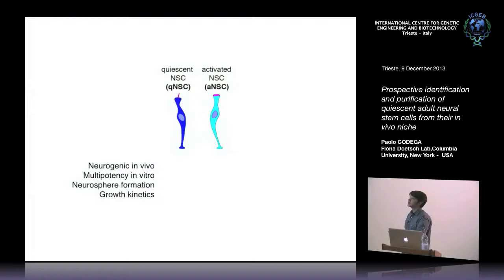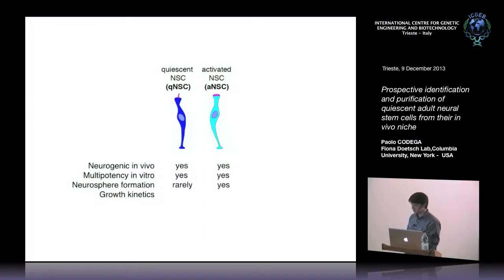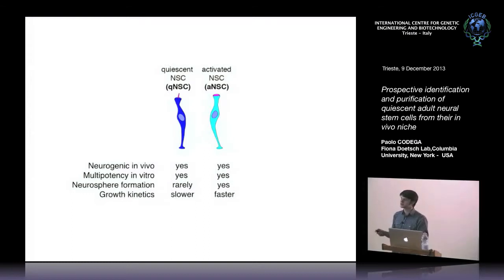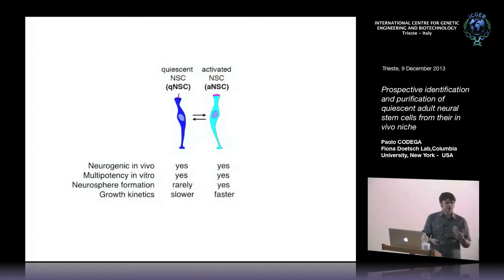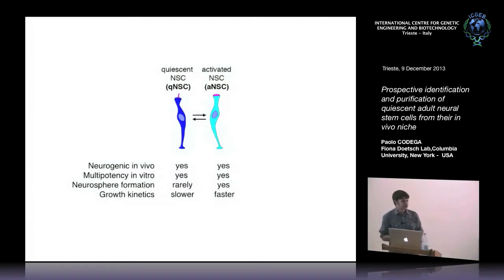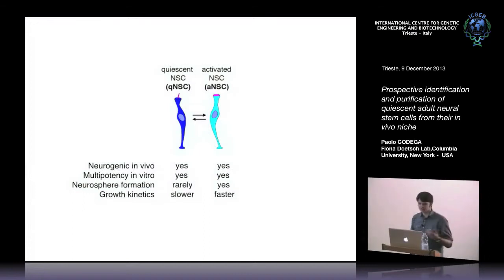In summary, we have two populations that are both neurogenic and multipotent in vivo, both giving rise to neurospheres — though quiescent cells do so only rarely and with slower kinetics — and the two populations can interconvert. We then began asking how these cells relate to other known markers important in neurogenesis, and what molecular pathways are active in each population.